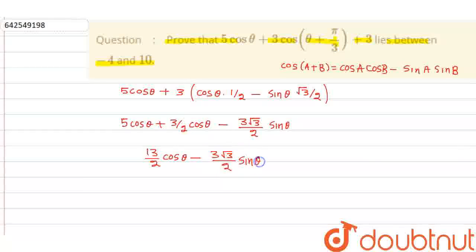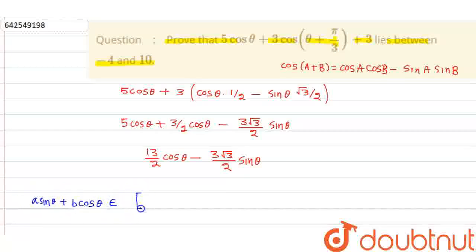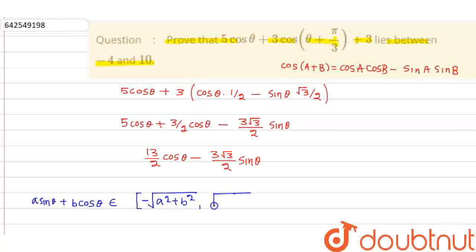Now see this. We know that if something is given like a·sinθ + b·cosθ, then the range of this thing lies between −√(a² + b²) and +√(a² + b²). This is the range of a trigonometric function given in that form.